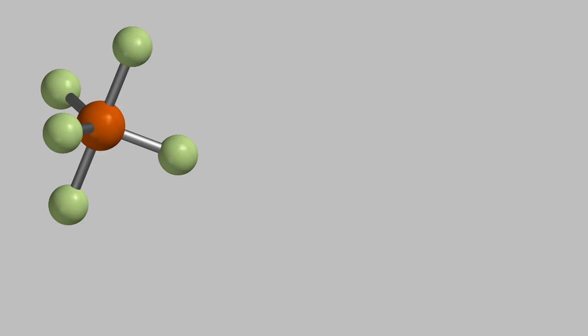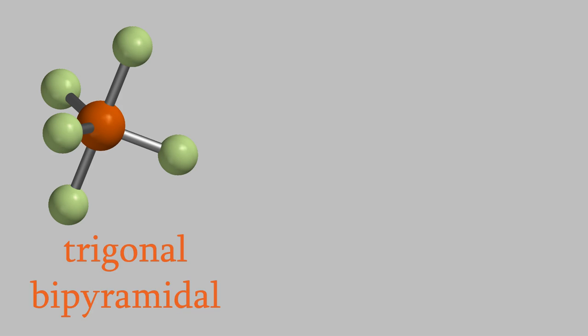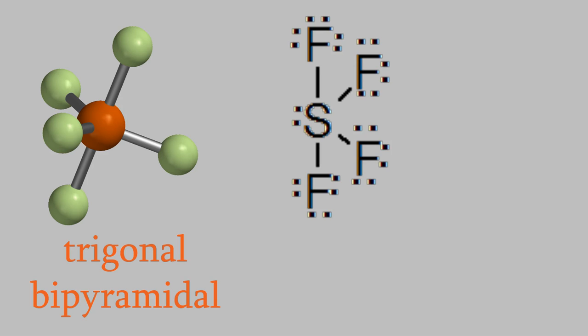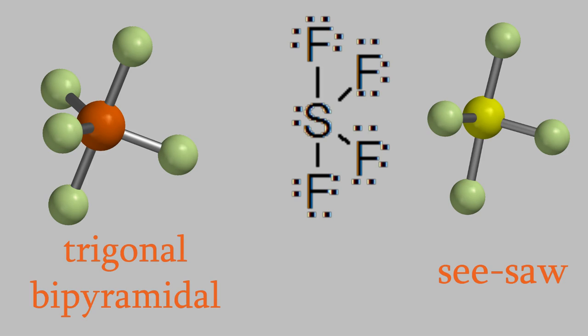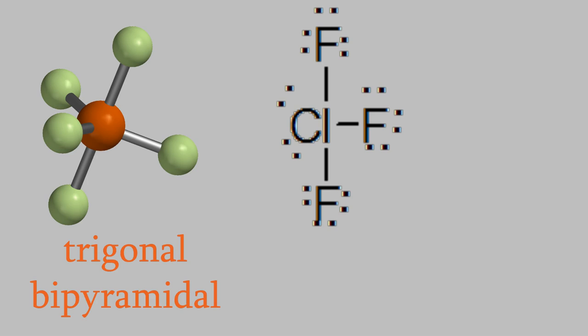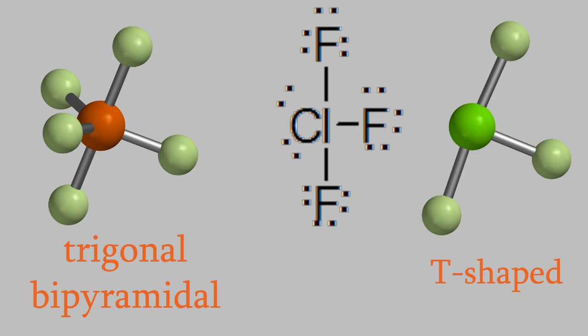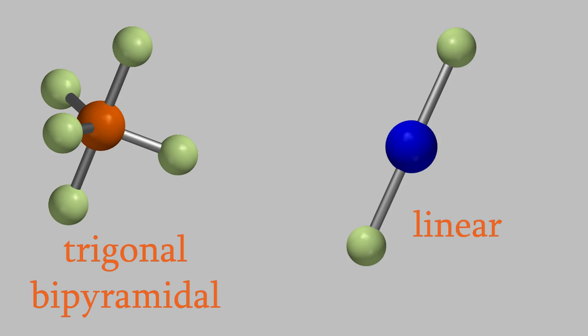We saw in the last video that when we have a molecule with five bonds and no electron pairs, we get a trigonal bipyramidal shape. In the molecule sulfur tetrafluoride, there are only four bonds on the sulfur, but there's also an electron pair on it. It turns out that the electron pair will be in one of the equatorial positions, so the molecule will be shaped like this, and this is called a seesaw shape. If there are two unshared pairs and three bonds, as in chlorine trifluoride, the two unshared pairs are both in equatorial positions, so we get what's called a T-shaped molecule. And if there are three unshared pairs and just two bonds, then all three unshared pairs are in the equatorial position, so we get a linear molecule, as in xenon difluoride. This is the exact same shape we got with carbon dioxide, so it has an angle of 180 degrees between the bonds.